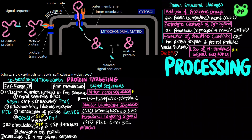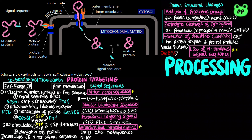Proteins targeted for mitochondria contain a mitochondrial targeting signal, abbreviated as MTS, also known as pre-sequences. Although mitochondria contain DNA, most of their proteins are encoded by nuclear DNA and must be targeted. The MTS is located on the N-terminus and contains a 10–70 amino acid long alternating pattern of hydrophobic and positively charged amino acids that form an amphipathic helix. MTS is cleaved once it reaches the mitochondrial matrix.